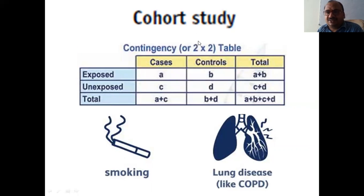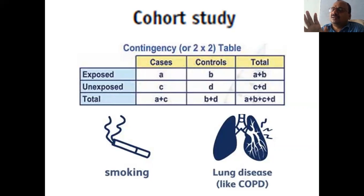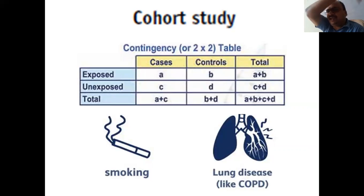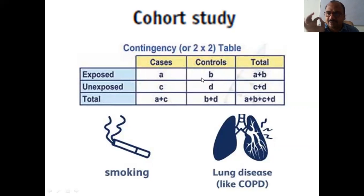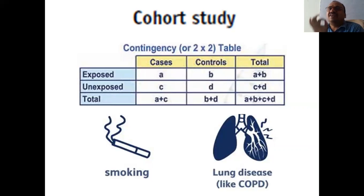This is a cohort study, and this is a contingency table — also called a two-by-two table. If you understand this table, the entire topic becomes clear. The topic comes to you; you don't need to chase it.